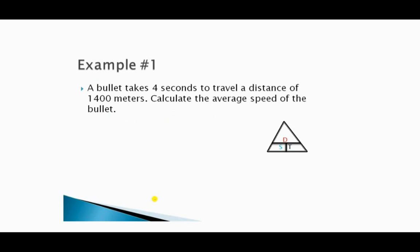Example number one: a bullet takes four seconds to travel a distance of 1400 meters. Calculate the average speed of the bullet. Since they are asking us to find the speed at which the bullet travels, I am going to use the DST triangle and cover up the S.